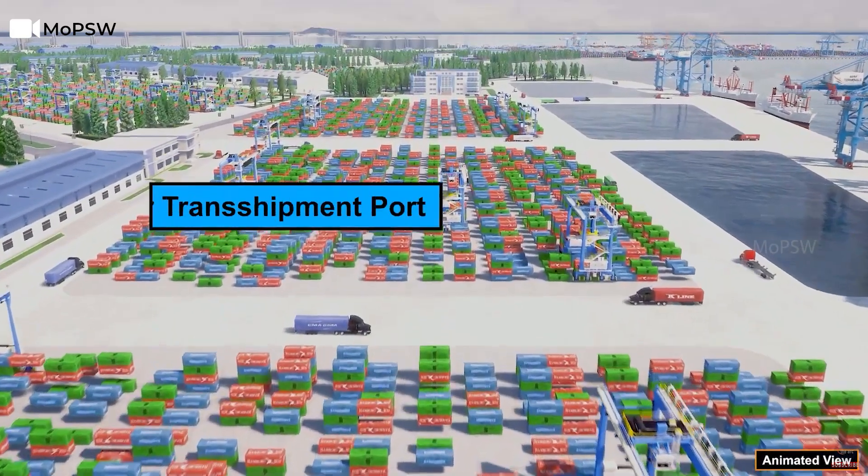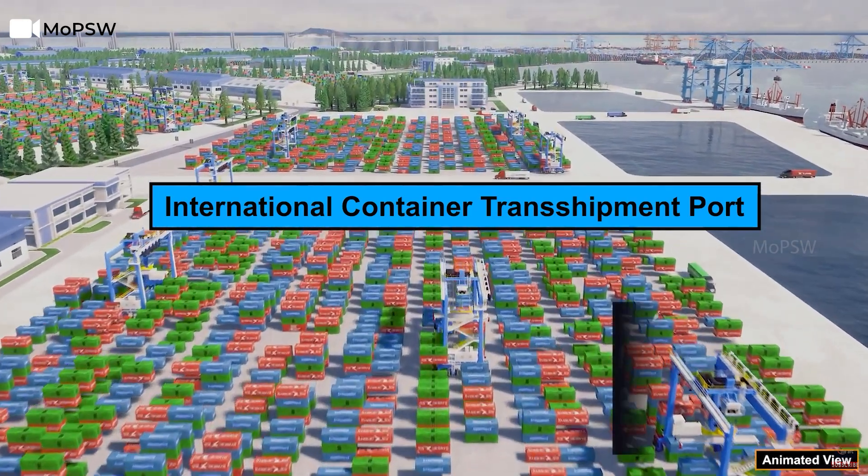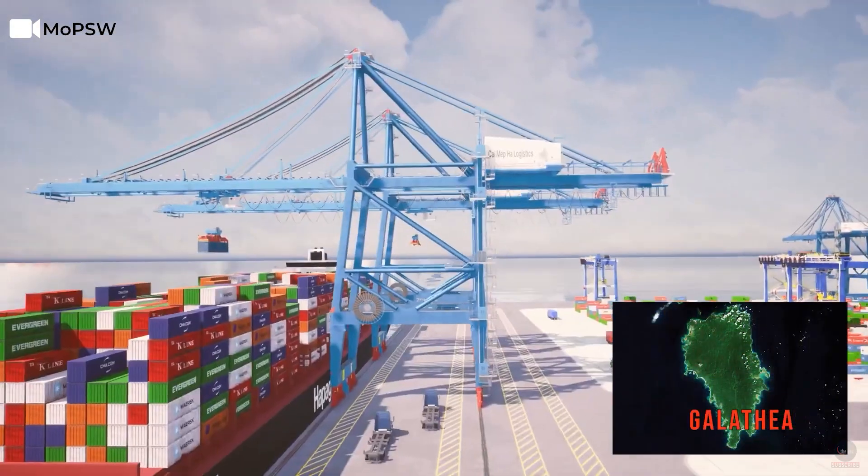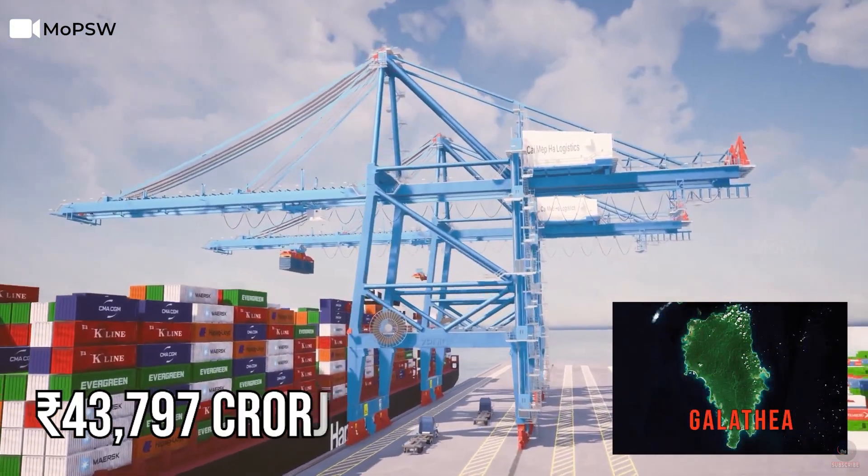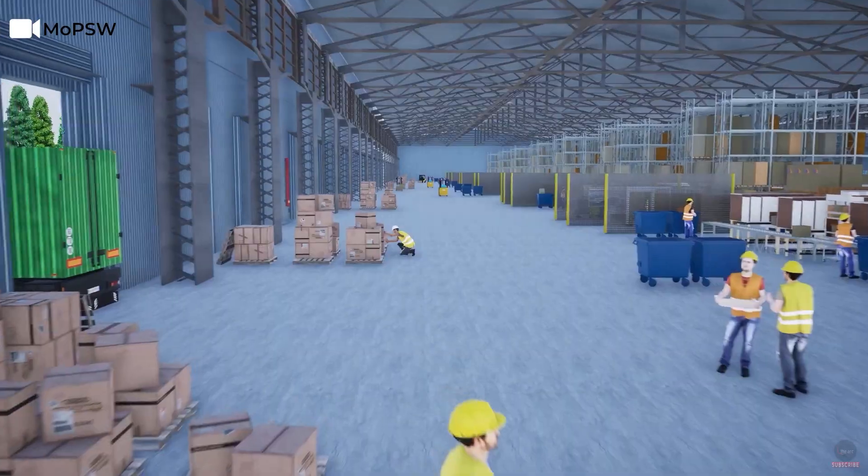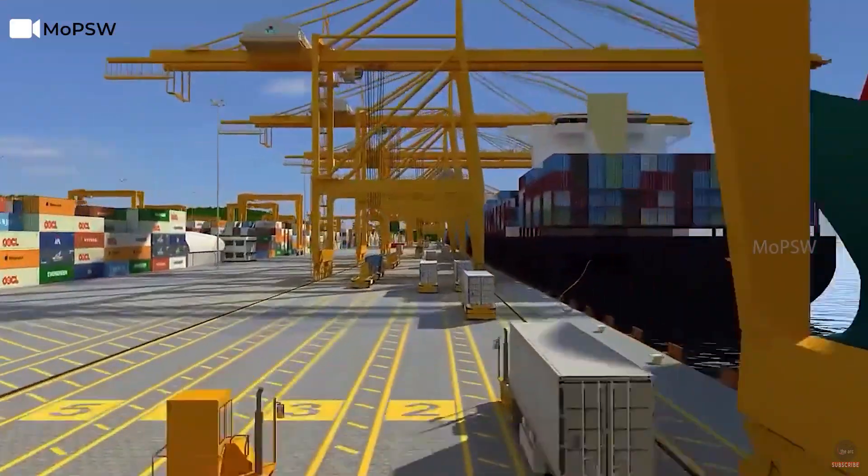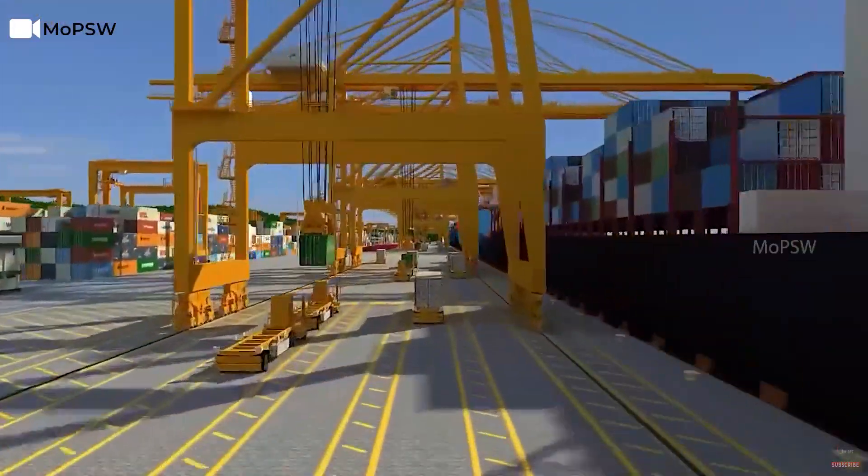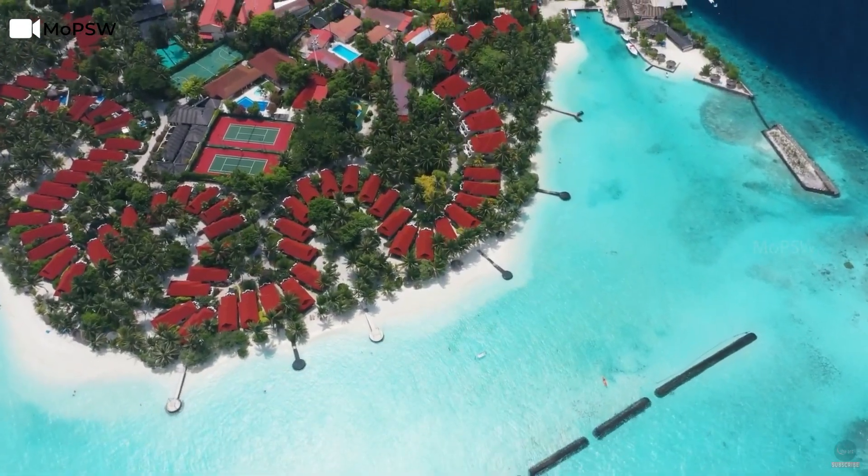The ICTP at Galathea Bay is expected to be fully developed by 2058. Upon completion of the port, it is expected to handle up to 16 million TEUs. A total of 44,000 crore rupees will be invested in the project. Other projects planned around the transshipment port include an airport, a township and a power plant.